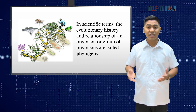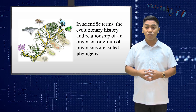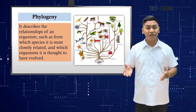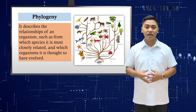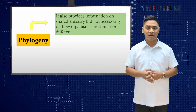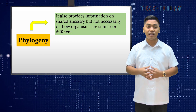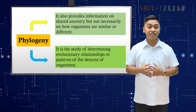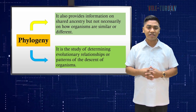In scientific terms, the evolutionary history and relationship of an organism or group of organisms are called phylogeny. Phylogeny describes the relationships of an organism, such as from which species it is most closely related and which organisms it is thought to have descended from. It also provides information on shared ancestry, but not necessarily on how organisms are different. Therefore, phylogeny is the study of determining evolutionary relationships of an organism.